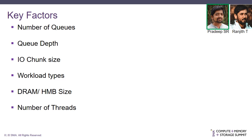Fifth is the DRAM or HMB size: DRAM is mostly a fixed element on the device, whereas HMB is controlled by the host, which can decide to allocate the preferred size, the minimum size, or even nothing. Based on the host's decision, performance can change. Sixth, and last, is the number of threads — representing the amount of multi-threaded applications on the host side accessing the device simultaneously — which can also impact performance.